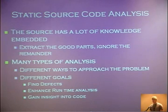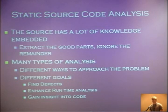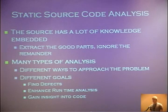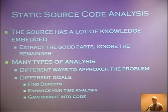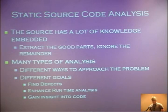The basic idea behind static source code analysis is that source code has a lot of knowledge embedded — it contains not only information about what the program is going to do, but also a lot of information about what the programmer intended it to do. If there is a bounds check, it means the developer thought that variable might be above the bound. The key is to extract the good parts and ignore the remainder, because just presenting a developer with a complete dump of everything learned through static analysis is going to be useless. Source code analysis contains many subcategories.